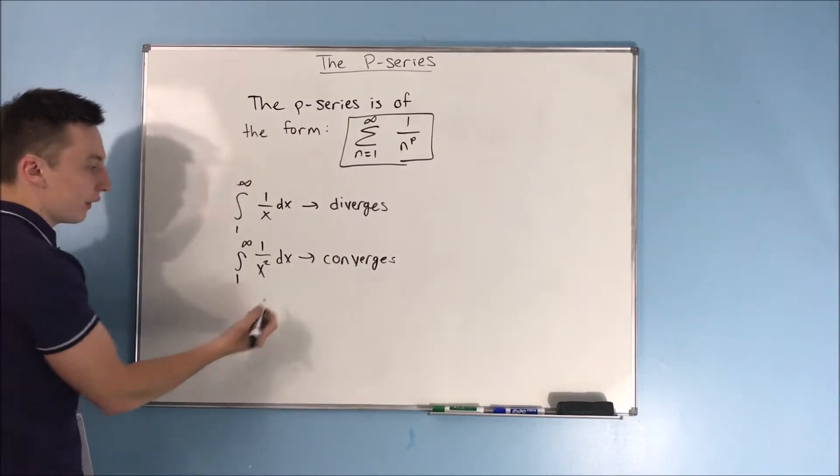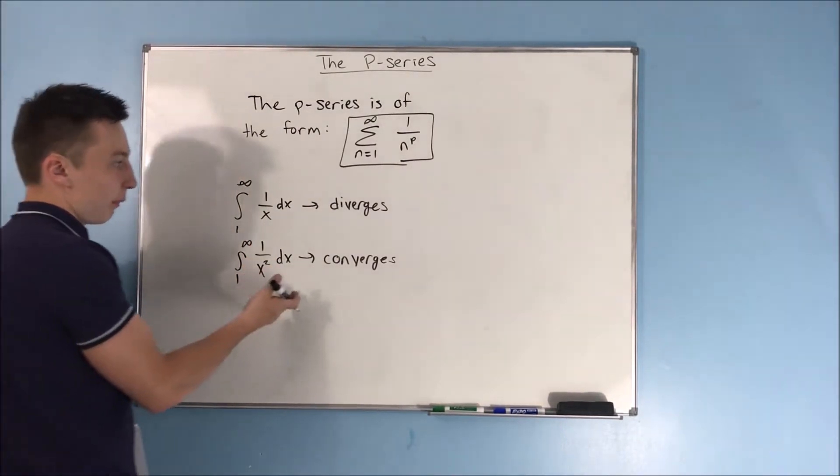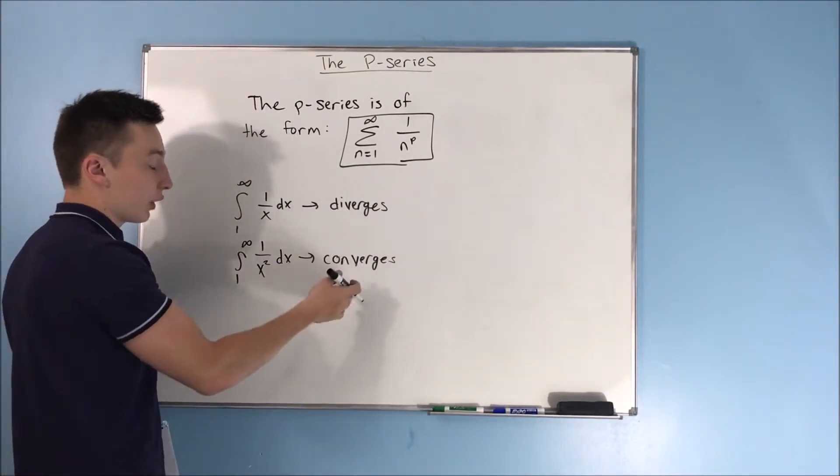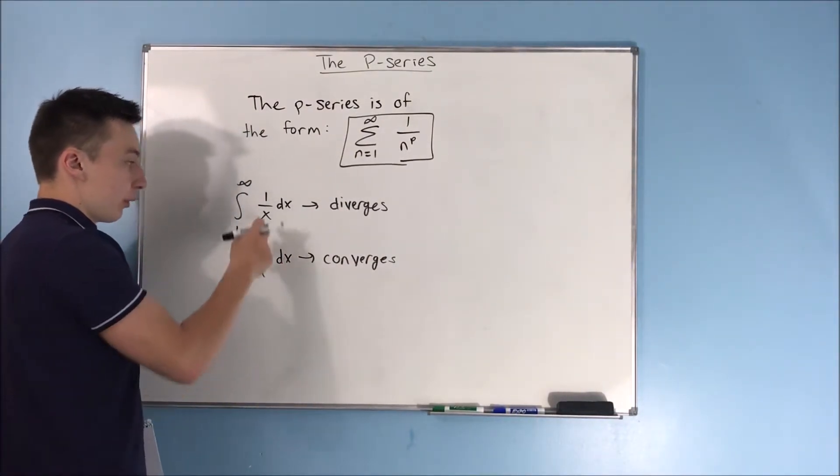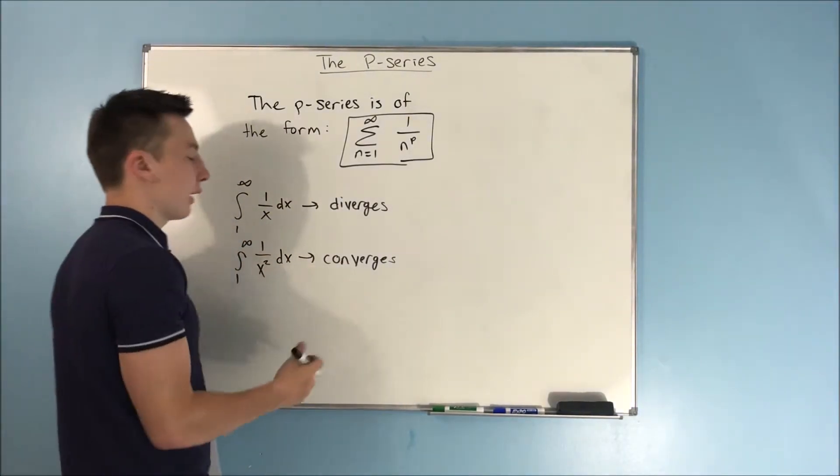So, you kind of think of it as, here we had different p-values, and that kind of showed you whether it diverged or it converged. Here we had a p-value of 1, and here we have a p-value of 2.